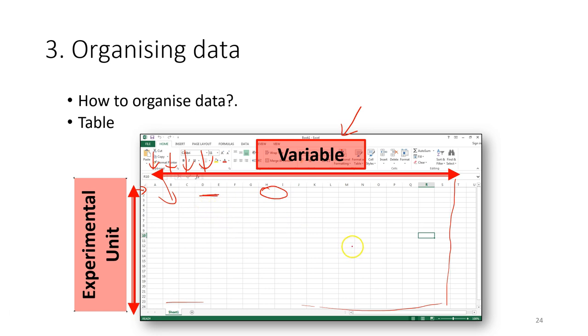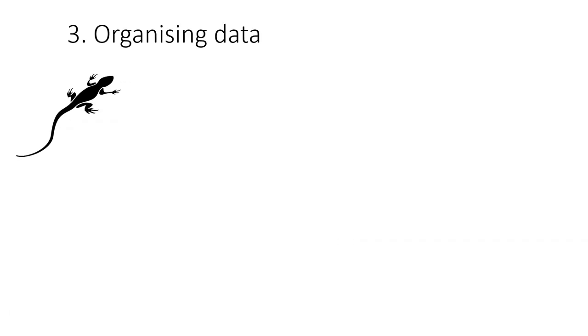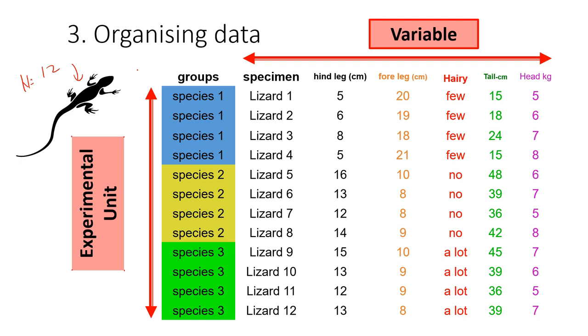This shows you one example. For example, now I have collected the data from 12 lizards, and for each of these lizards I record the species name and some of the characteristics of each of these lizards. The way that I arrange the data should be in the table form.